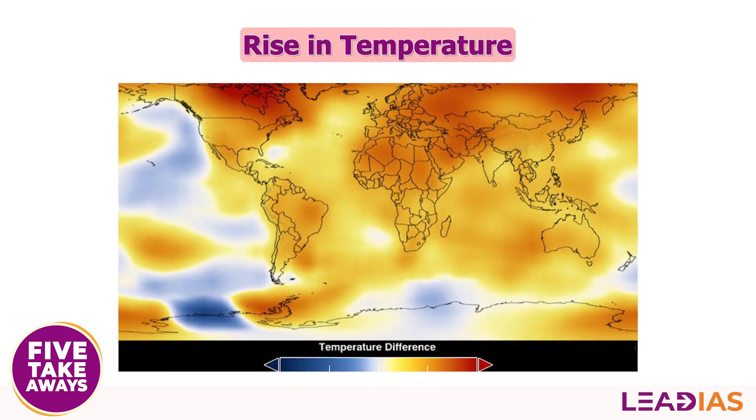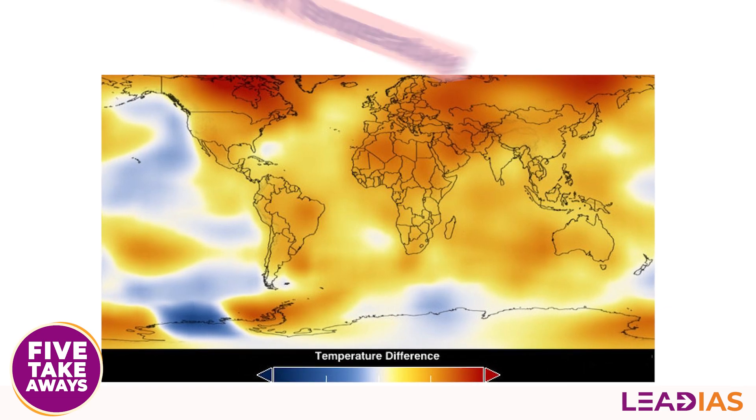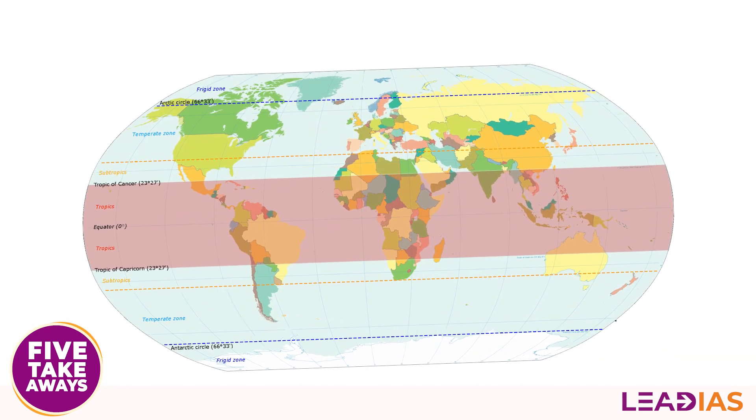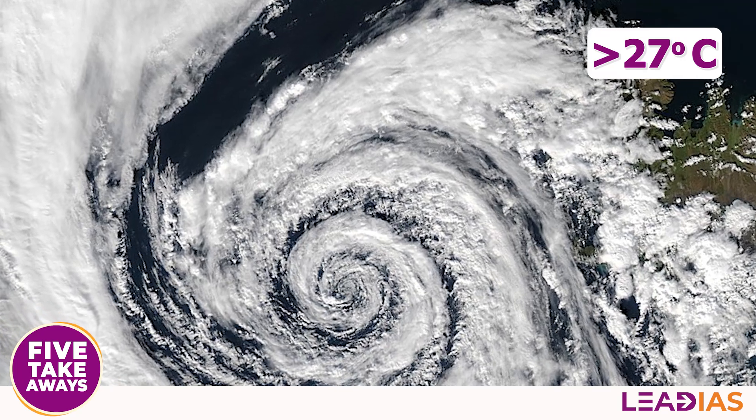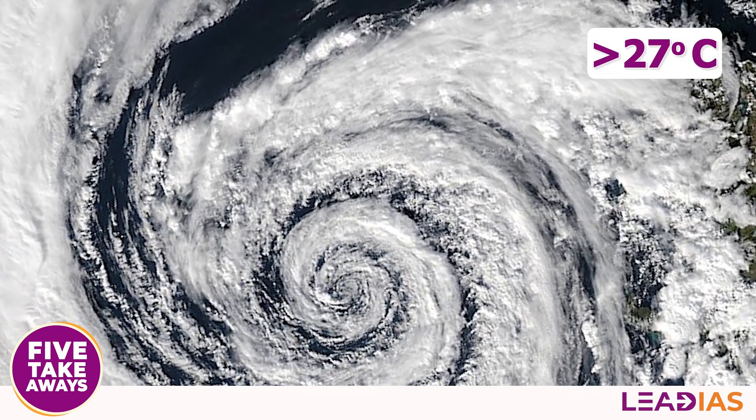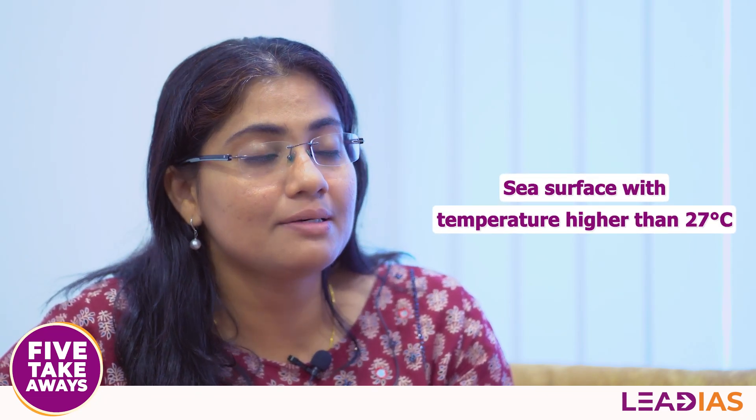This cyclone is being formed in the tropical region. The tropical region is near the sun's temperature zone. In a tropical region, the temperature is 25 to 26 degrees. That is the sea surface temperature, and the temperature of the sea will go to 27 degrees Celsius.